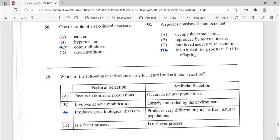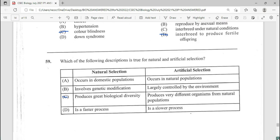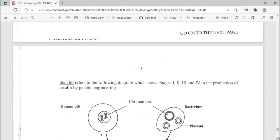58. A species consists of members that interbreed to produce fertile offspring. D being our answer for 58. 59, a repeated question with just the word changing but the answer remain the same. Which of the following description is true for natural and artificial selection? C is going to be our answer here. Remember you can pause the video and read but we are working with time.